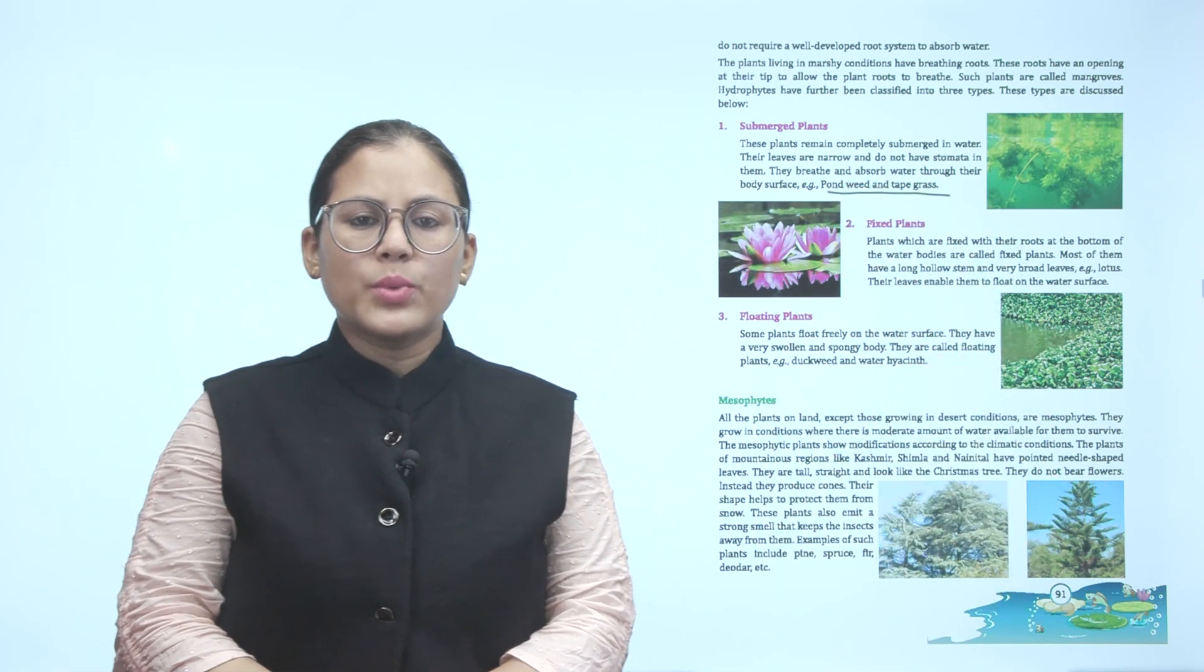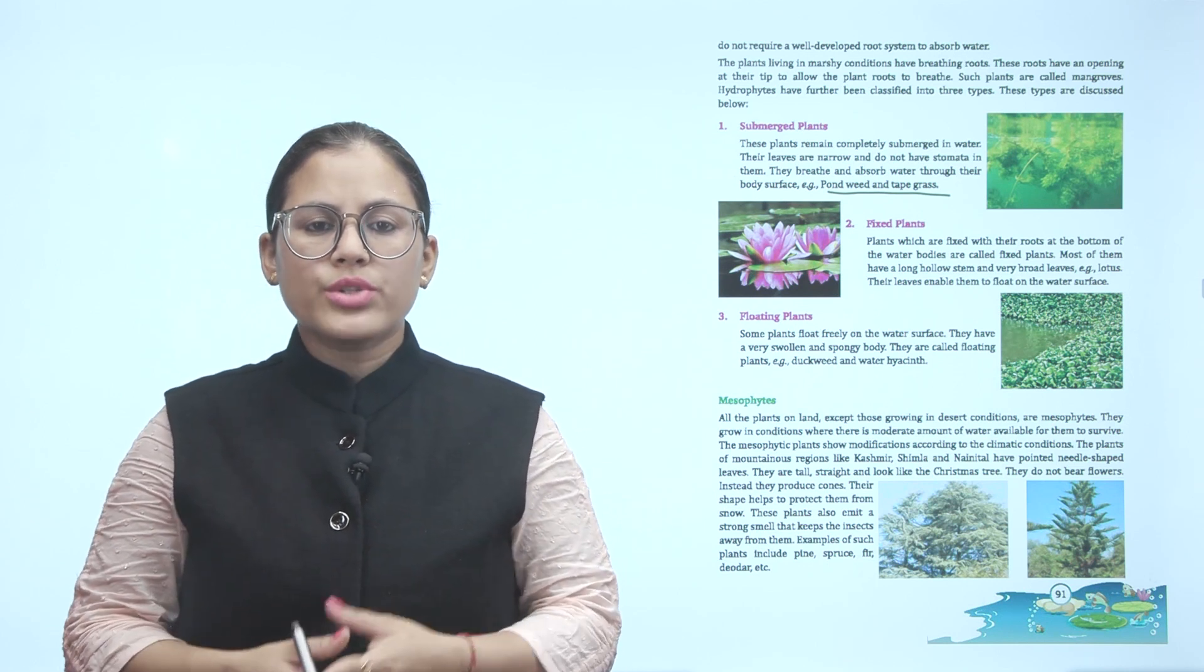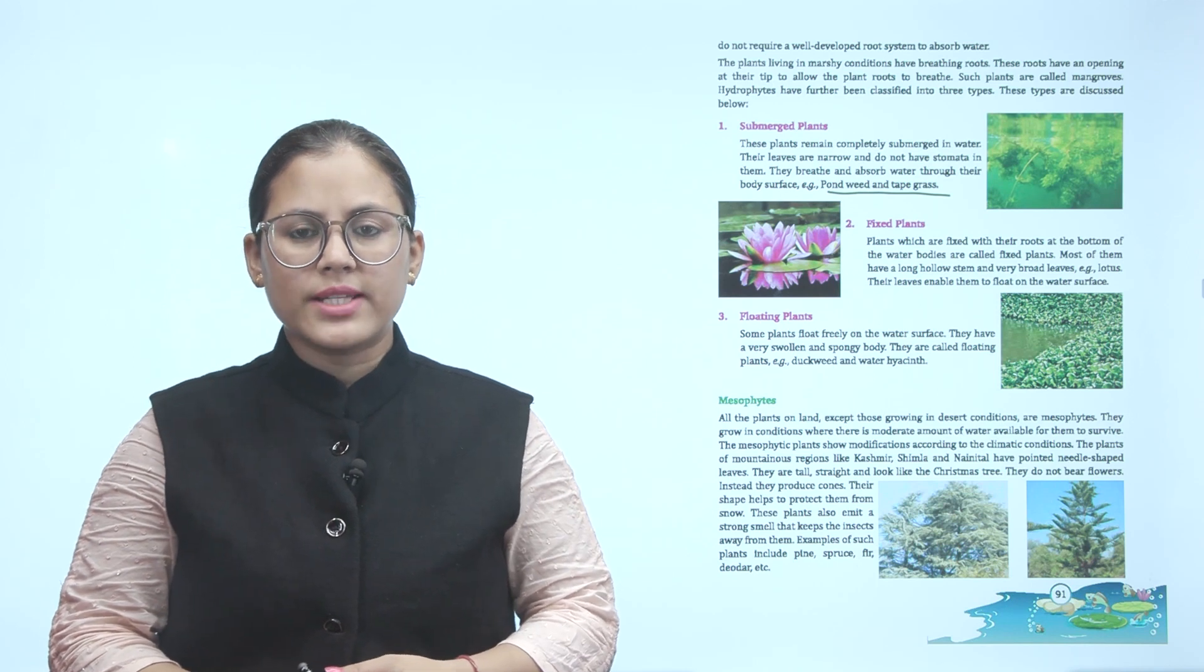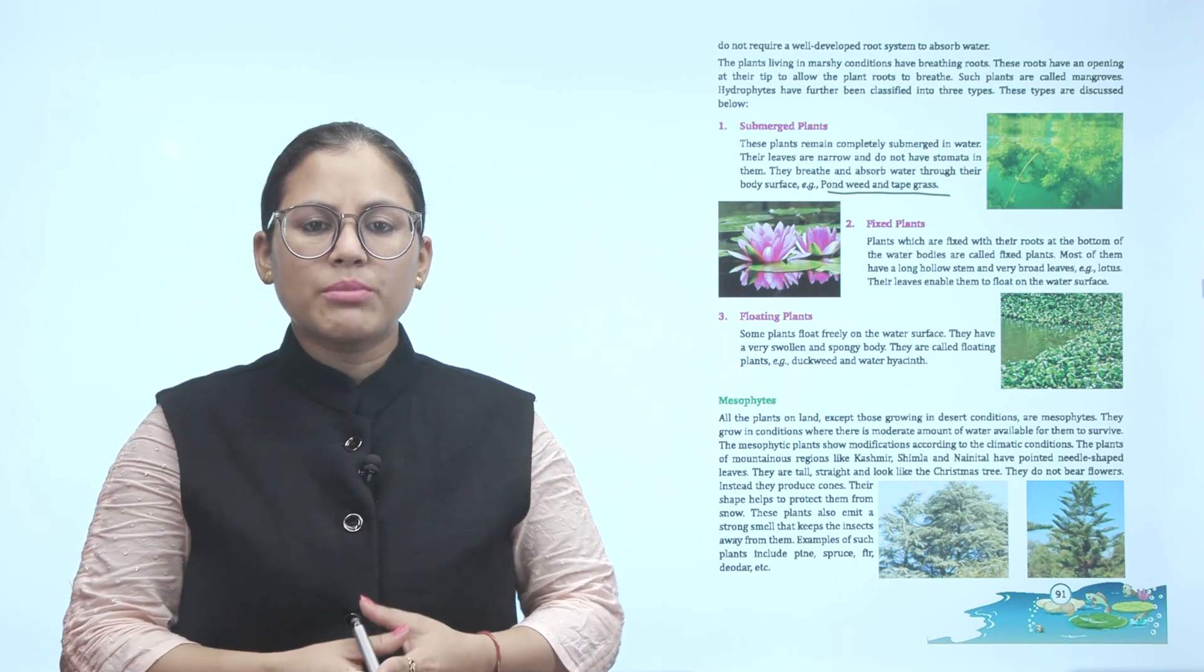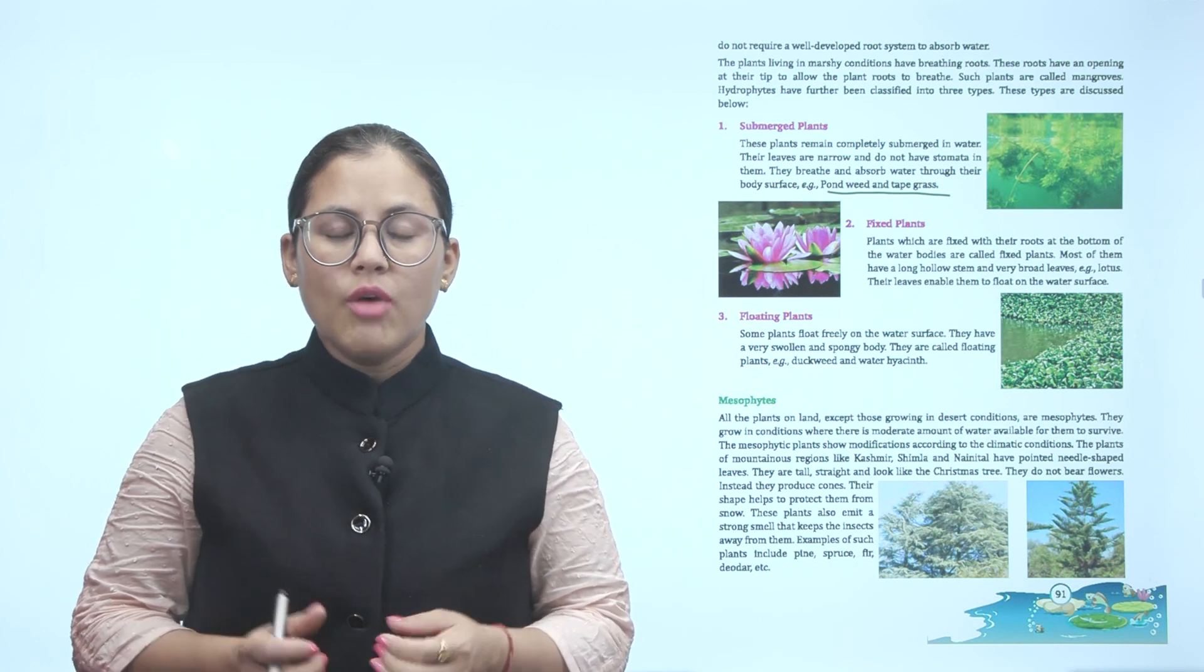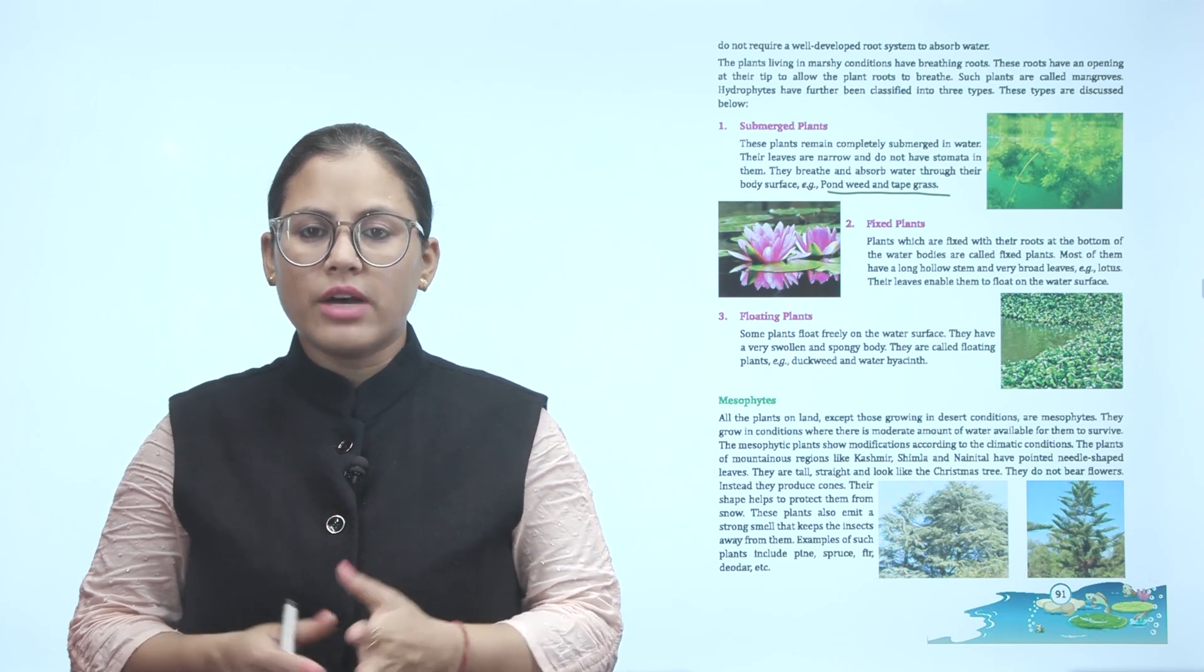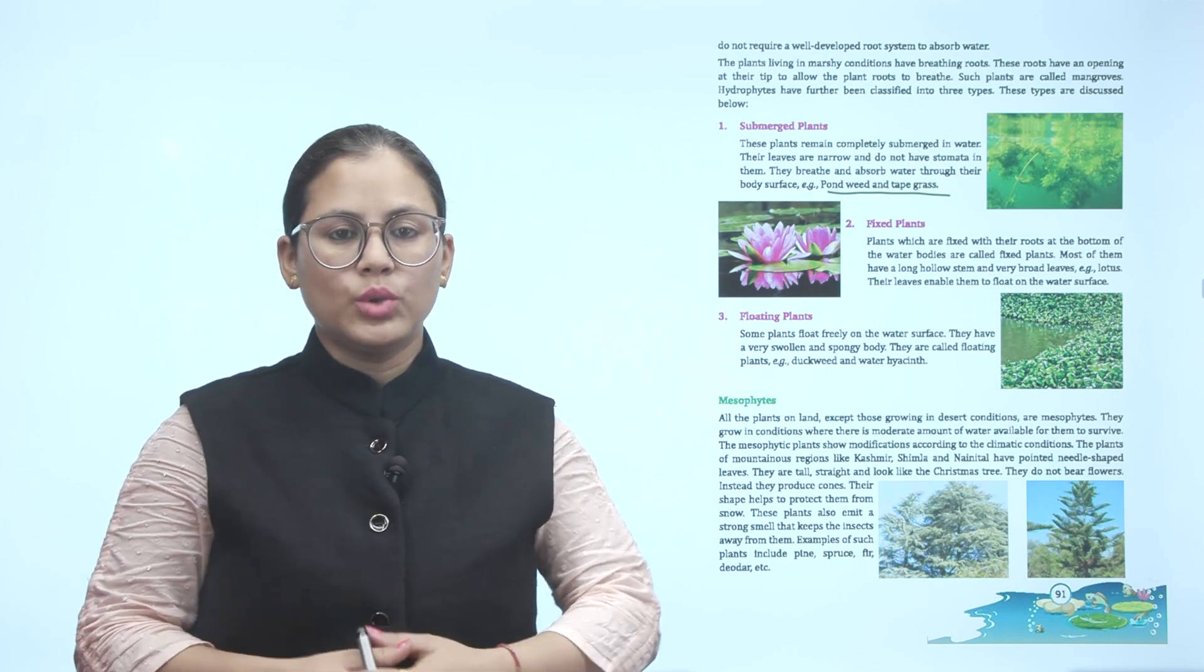Fixed plants. Plants which are fixed with their roots at the bottom of the water bodies are called fixed plants. Most of them have a long hollow stem and very broad leaves. Example: lotus. Their leaves enable them to float on the water surface. Fixed plants have roots at the bottom of water bodies, hollow stems and broad leaves.